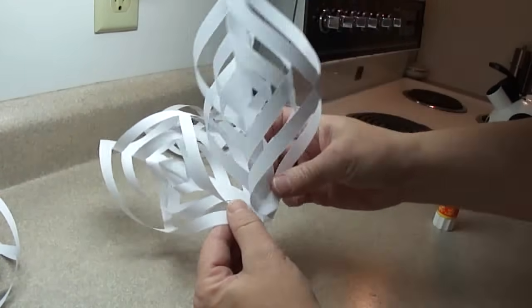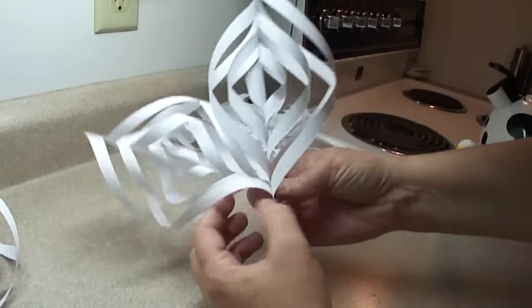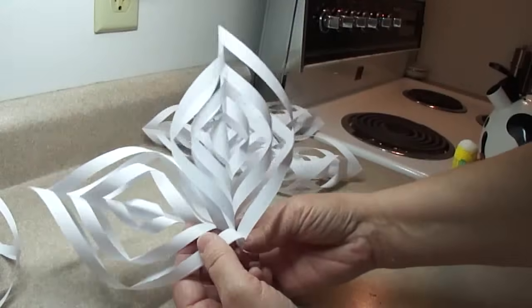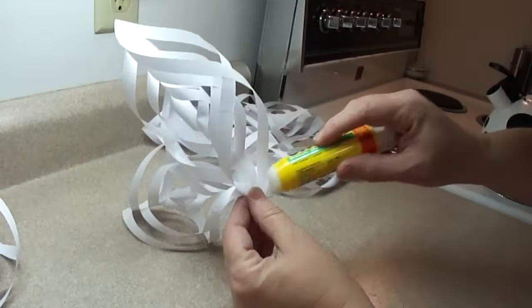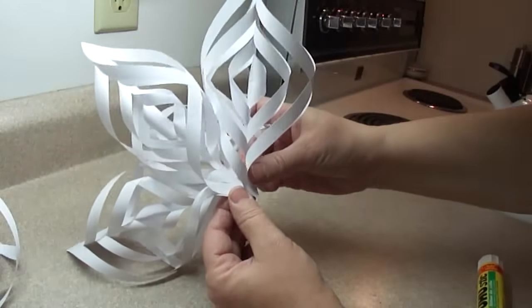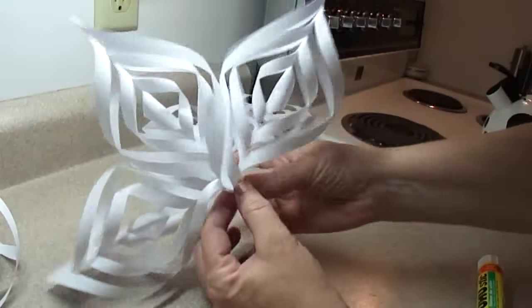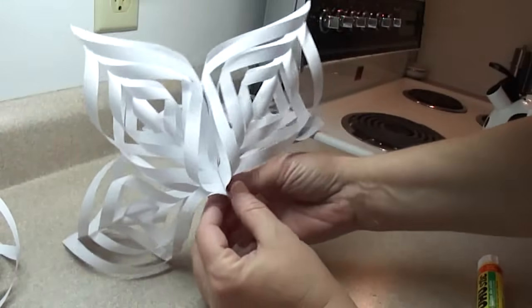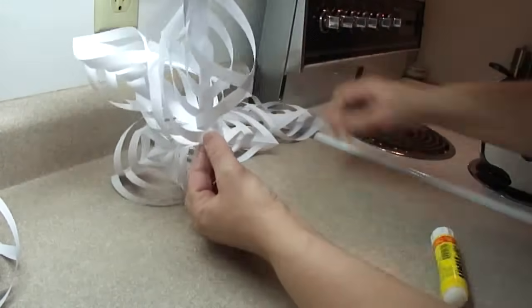You put glue on one end, and then you're just going to put two of the end pieces together like that and press together and hold until it's solid. A little more glue on the point, and then you're going to glue point to point like that. And just continue adding your segments all the way around until all six of them are attached.